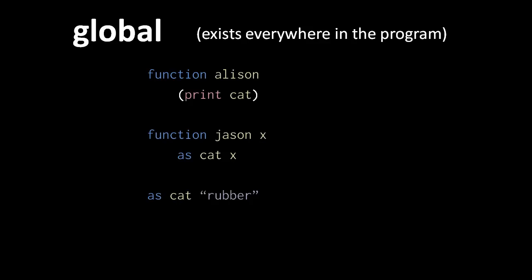Here we have three global things: a function ellison, a function json, and a variable cat. The function ellison uses the global variable cat such that when it is called, it prints the value of cat, which at this time is the string rubber. The function json also uses the global variable cat, but it assigns to it. Now normally an assignment in a function creates a local variable of that name, but because here we have a global variable named cat, any assignment to that name is going to assign to the global, not to any local.